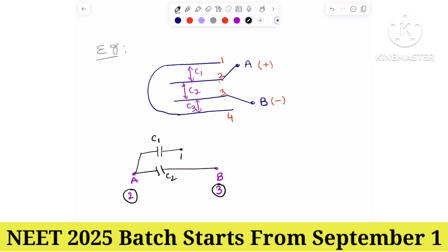The first plate is joined to the fourth plate, and the fourth plate is joined to the third. So plates 4 and 1 are joined together. This capacitor between plates 3 and 4 is C3. We know C1 equal to C2 equal to C3, because all are equally spaced, which is epsilon-naught times A divided by D. Let it be C.